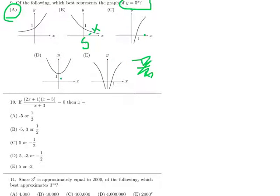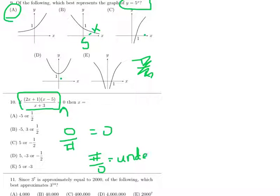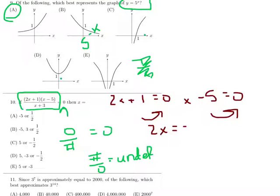Okay, number 10. If a fraction equals 0, 0 over a number is 0. This is just a review. A number over 0 is undefined. So you just care about the top equaling 0, which means either 2x + 1 equals 0 or x - 5 equals 0. So add 5 to both sides, or subtract 1 from both sides, divide by 2. So x equals 5 or x equals negative 1/2.